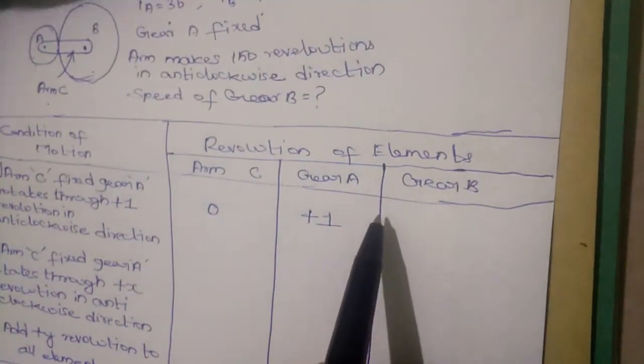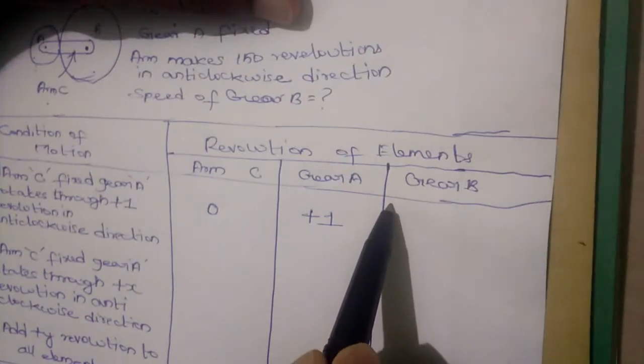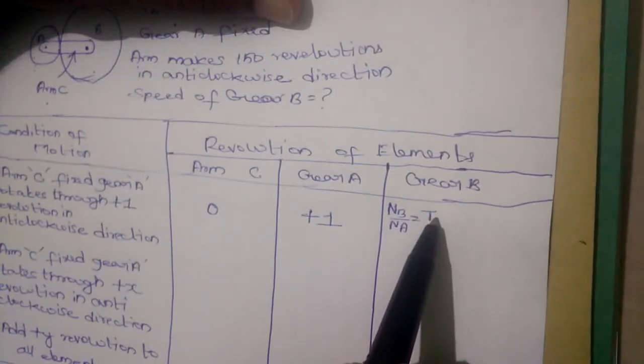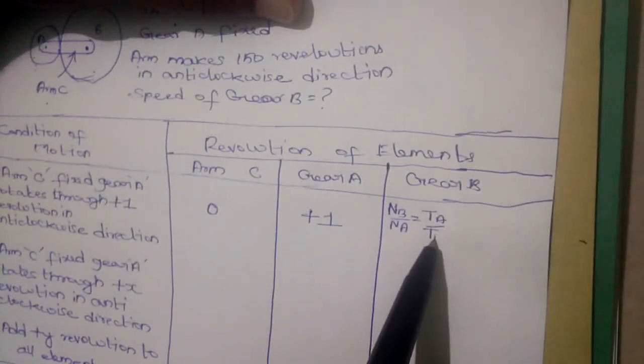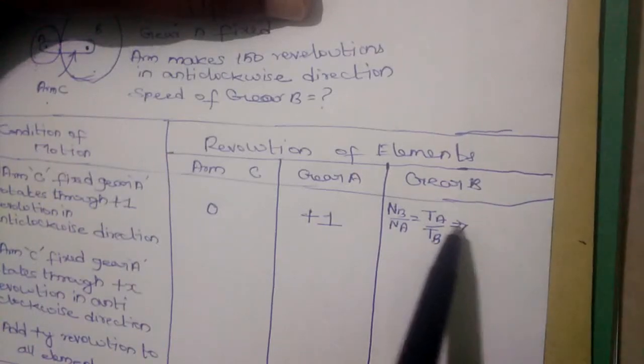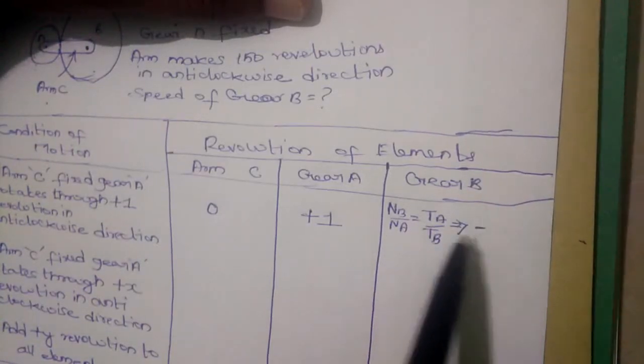The speed of Gear B can be written as, you know NB by NA is equal to TA by TB. Speed is inversely proportional to number of teeth. Speed of Gear B can be written as minus of...